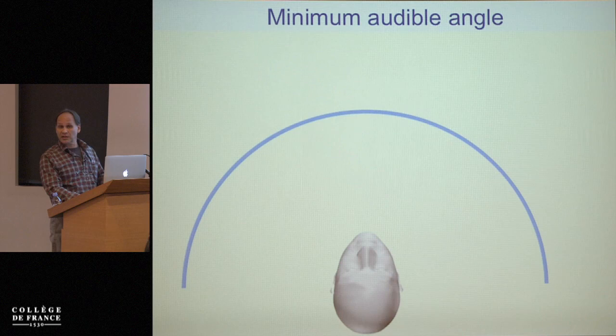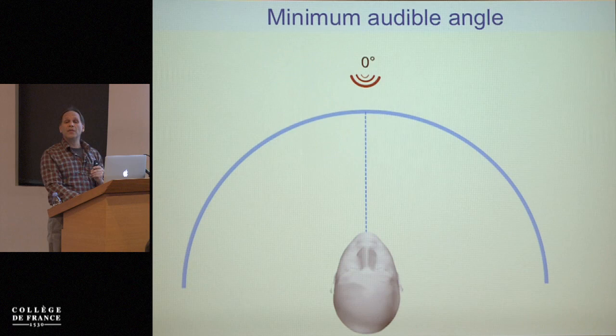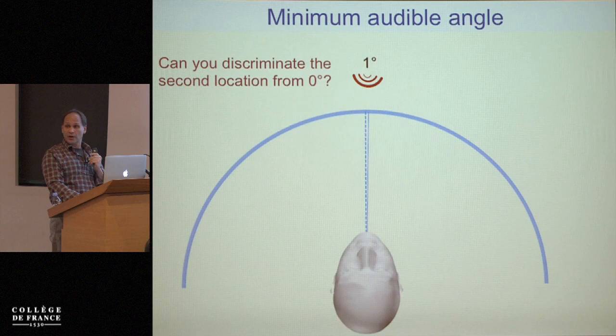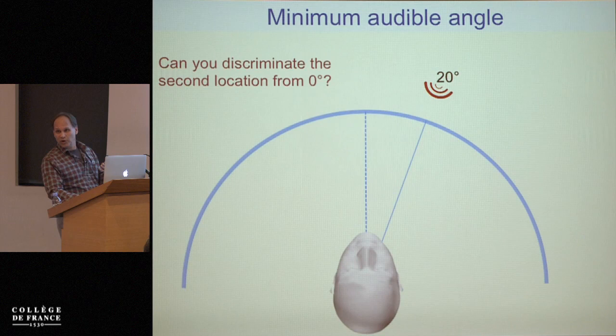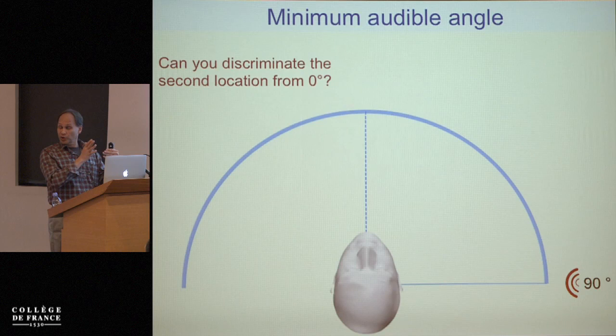Here's another basic skill: the ability to localize sound in the environment. We ask what is the minimum angle that one can detect — can you tell the difference between a sound straight ahead and one that's one degree to the side, or five degrees, or 20 degrees? If we perform these tasks on children from months of age all the way to adulthood, we get a clear developmental trajectory.